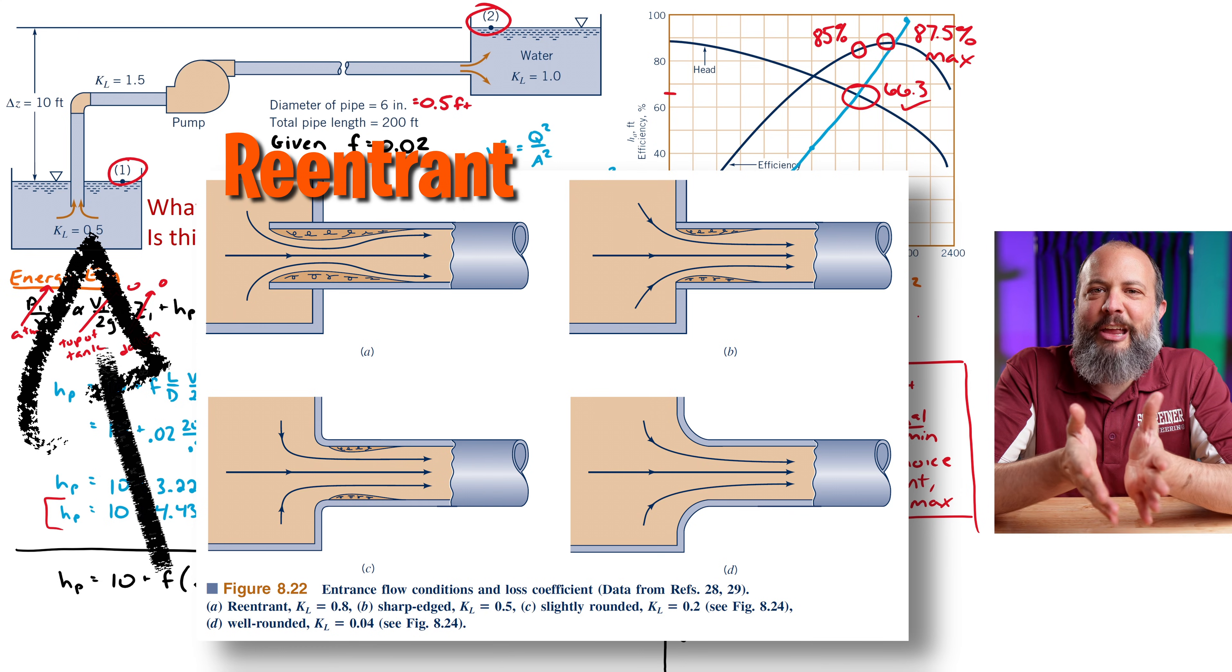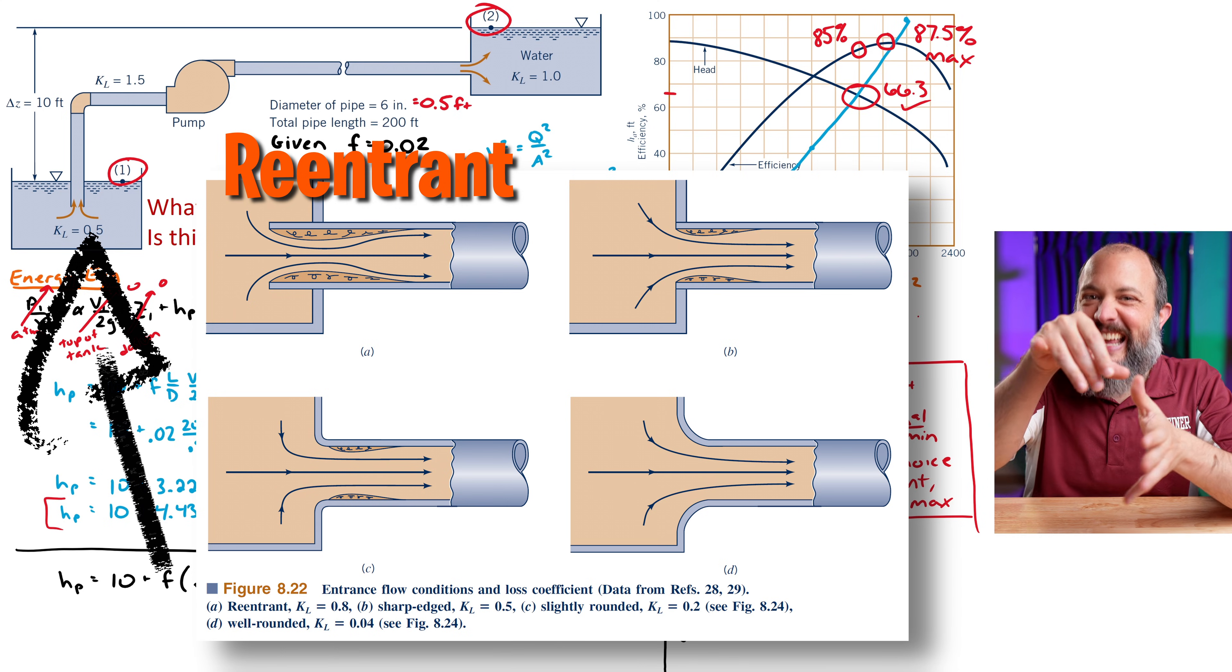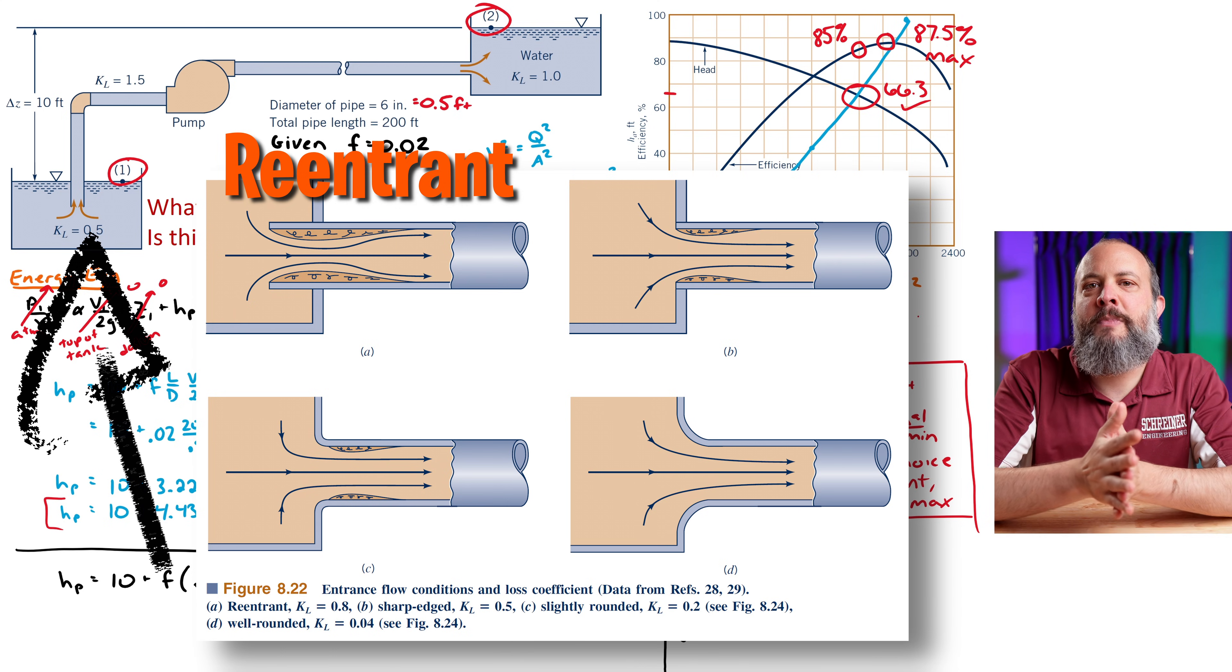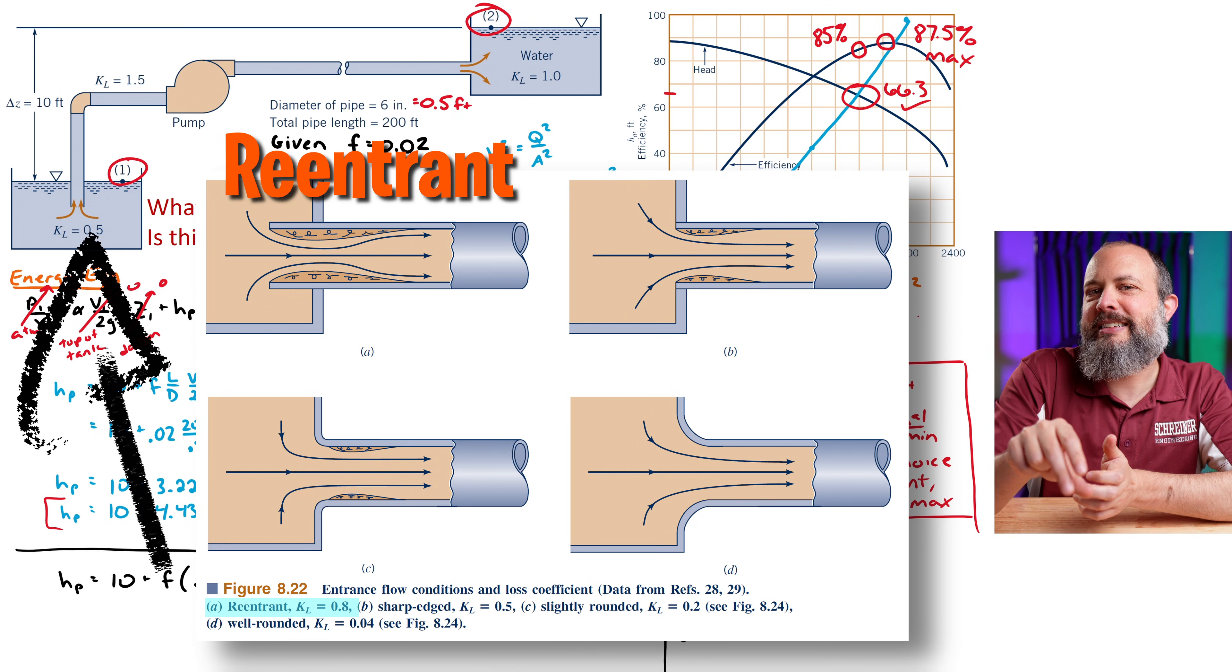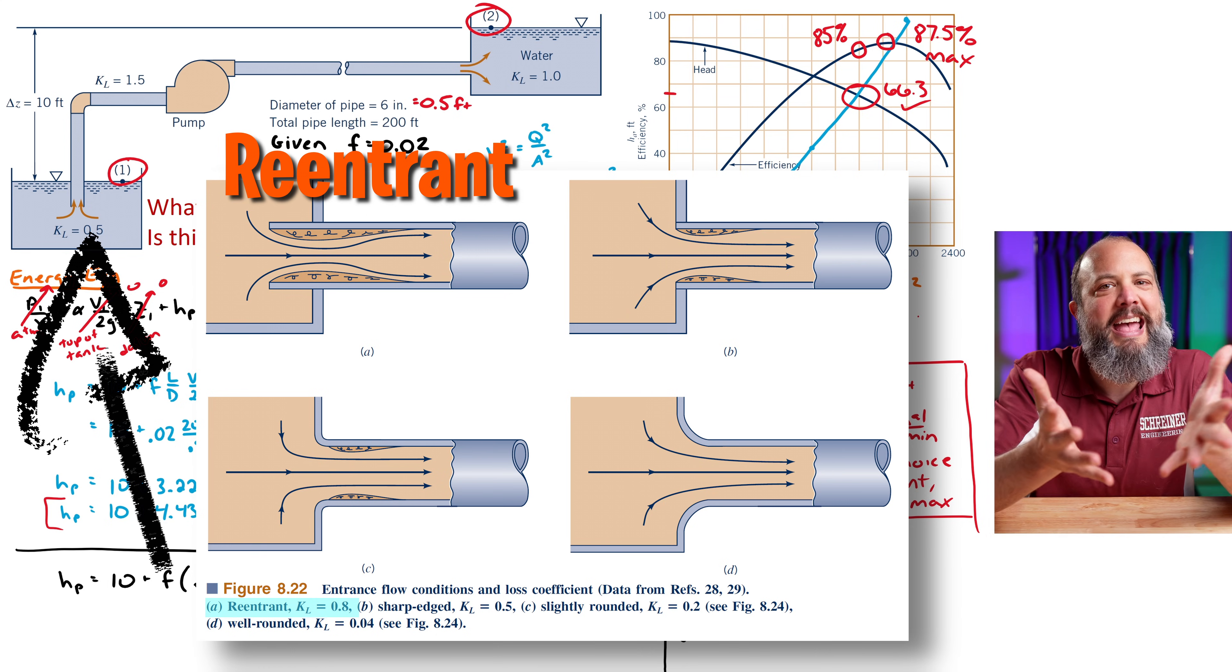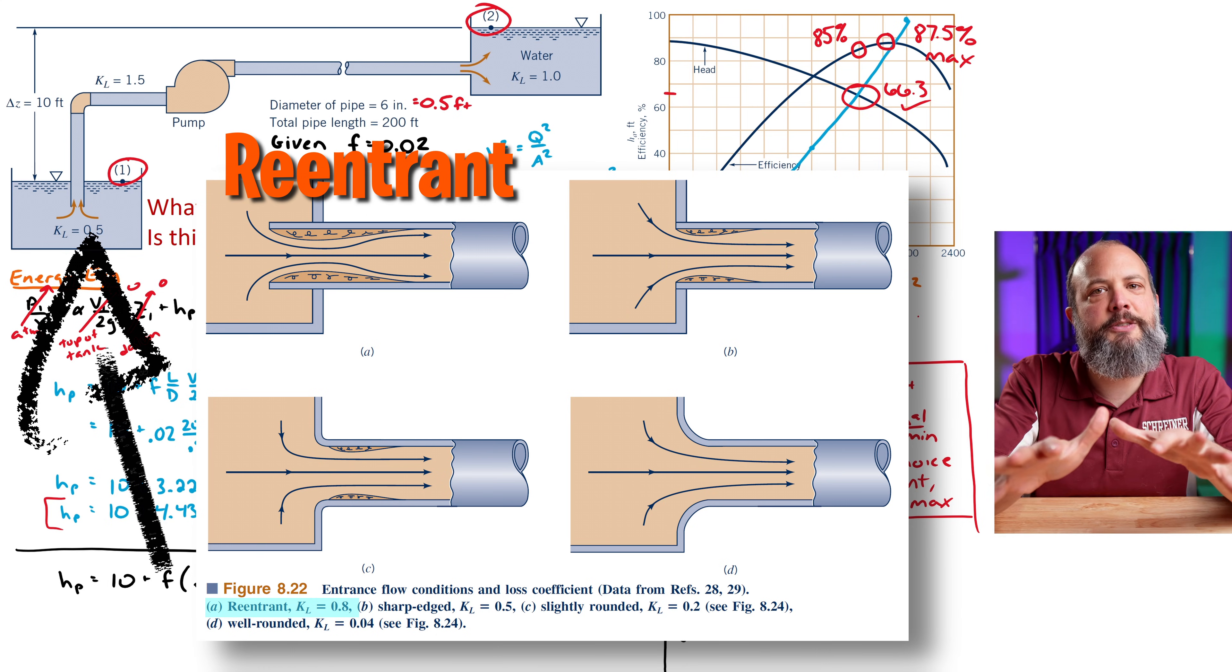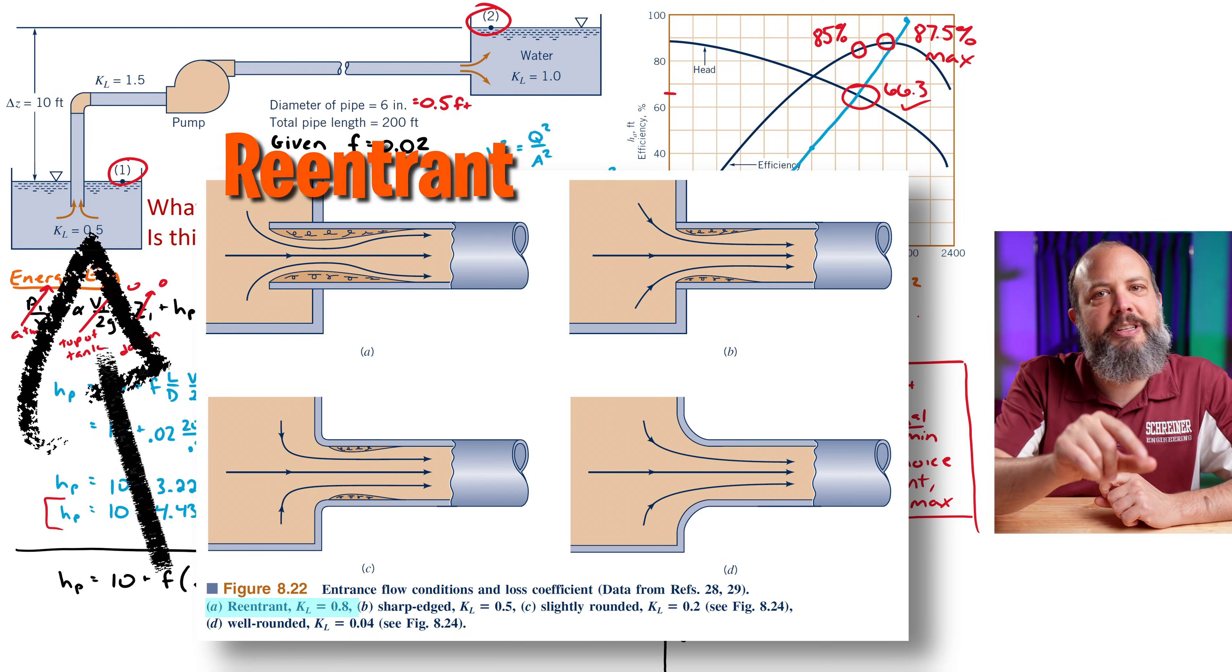So looking at this picture, this looks like a re-entrant entrance. That's where the pipe is actually sticking into the tank. That's called a re-entrant. And in my table, this would have a K value of 0.8, not 0.5. 0.5 would refer to a regular square edged entrance. And even checking different textbooks, they were all kind of the same number. So I'm going to use 0.8 for the entrance instead of the loss of 0.5 that shows on the picture.